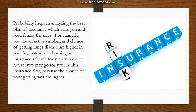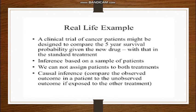In today's time, health insurance and car insurance also rely on probability. Insurance companies have built databases to decide how to sell their policies. For example, if you go for car insurance, they will ask about your health. If you are a smoker, the chances of your lungs being affected increase, your hospitalization chances increase — so they may recommend health insurance over car insurance. They sell policies according to their database.